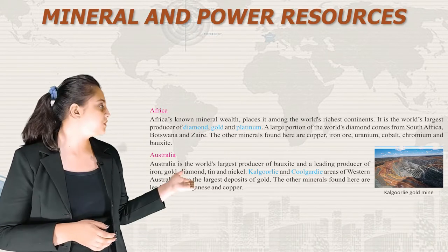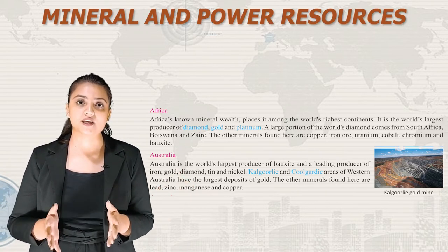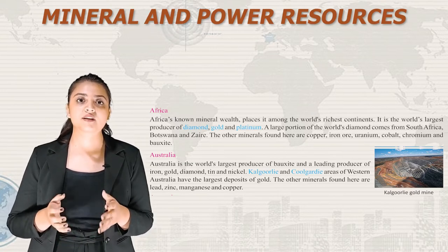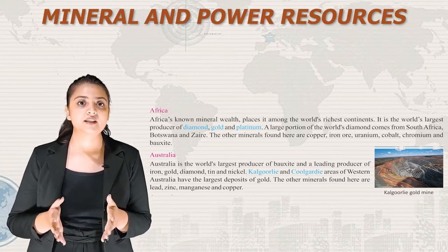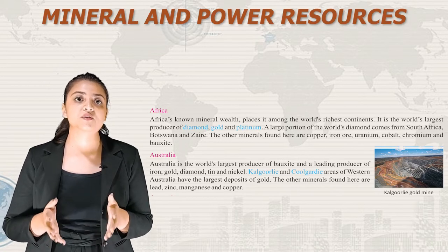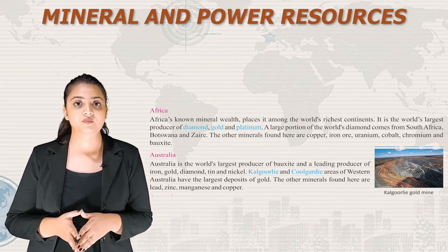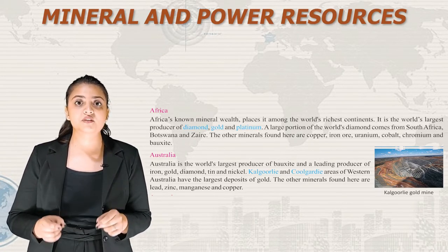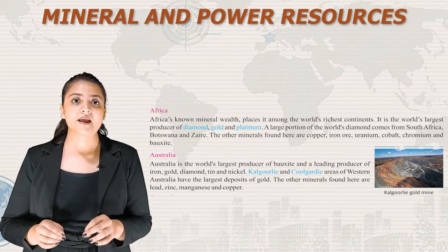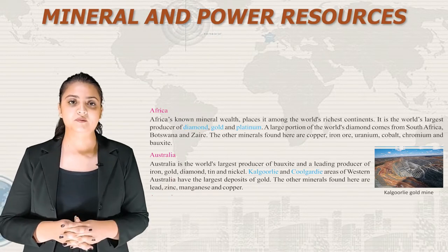Australia is the world's largest producer of bauxite and the leading producer of iron, gold, diamond, tin and nickel. The Kalgoorlie and Coolgardie areas of Western Australia have the largest deposits of gold. Other minerals found here are lead, zinc, manganese and copper. Here is an image of the Kalgoorlie gold mine.